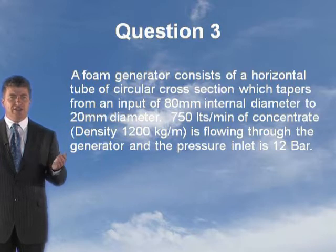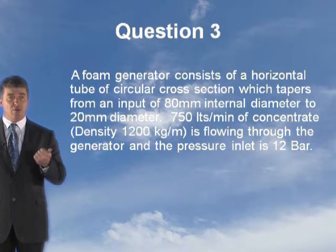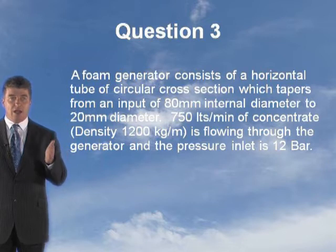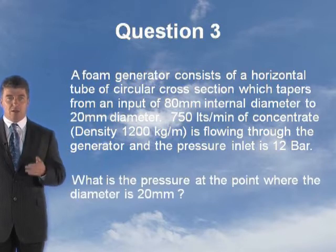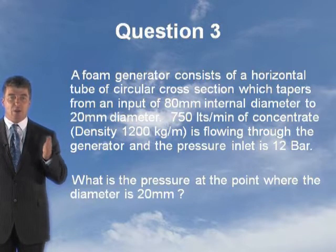Now, 750 litres a minute of concentrate, with a density of 1,200 kilograms per metre cubed, is flowing through the generator, and the pressure inlet is 12 bar. What is the pressure at the point where the diameter is 20mm? That's the question.